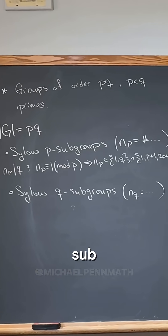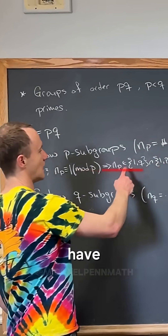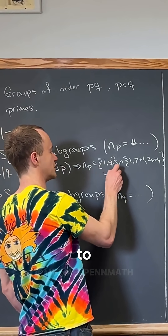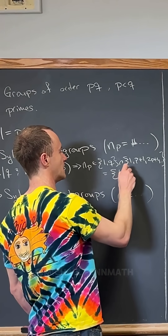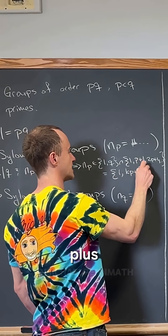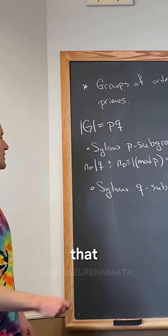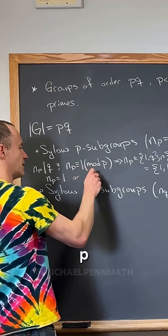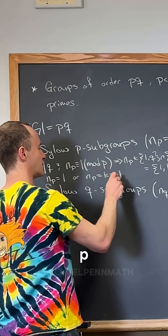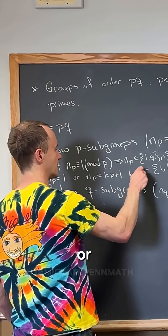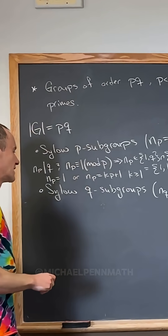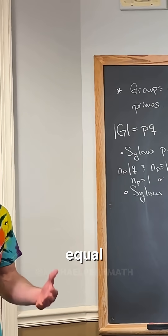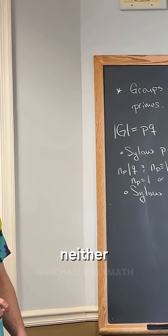This does not necessarily tell us how many Sylow p-subgroups there are, because the intersection could be non-trivial. The intersection gives {1, kp+1} for some number k, so n_p is either 1 or kp+1 with k ≥ 1. We can combine these as n_p = kp+1 where k ≥ 0.